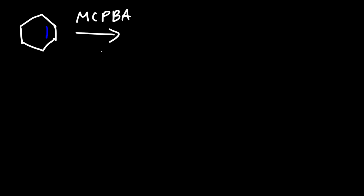MCPBA is a peroxy acid. It has the functional group RCO3H. A peroxy acid looks like a carboxylic acid in the sense that it has a carbonyl group. But instead of a hydroxyl group, it has a peroxide group attached to carbon. So this is a peroxy acid.